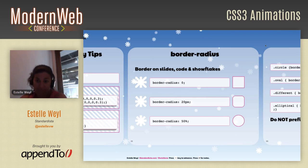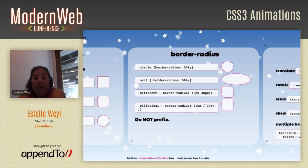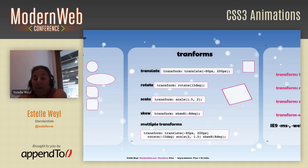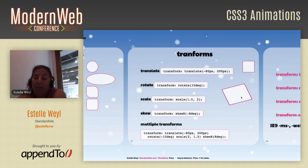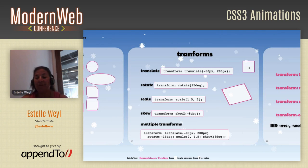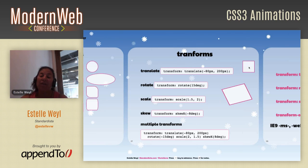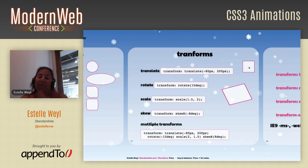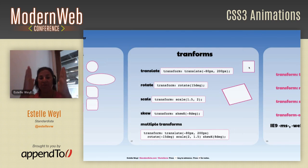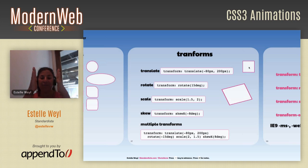Next are transforms — when you take an element and translate it, rotate it, scale it, or skew it, or a combination of all four. Translate moves an element along the X and Y axes. Here I'm moving 80px to the right and negative 80px, so 80 pixels to the left and 200 pixels down. Then rotating 15 degrees, scaling to twice as wide and one-half as tall, and skewing. Skewing along X keeps the top and bottom parallel while the left and right are skewed.